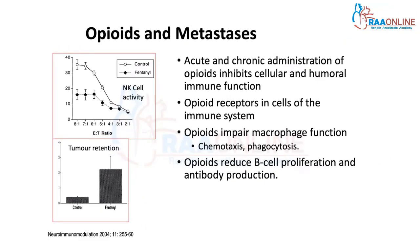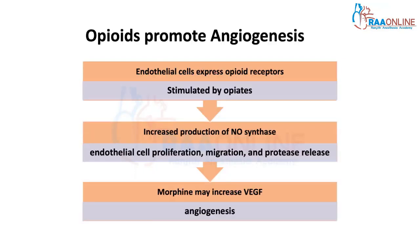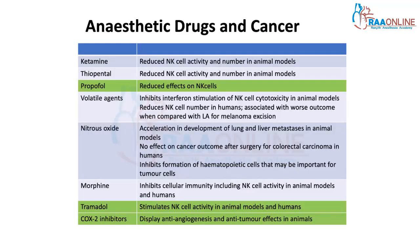Opioids also promote angiogenesis. Endothelial cells express opioid receptors which are stimulated by opiates, leading to increased production of nitric oxide synthase, causing cell proliferation, migration, and protease release. Morphine also increases vascular endothelial growth factors, which causes angiogenesis — all of which helps tumor cells take hold, acquire a vascular supply, and metastasize.